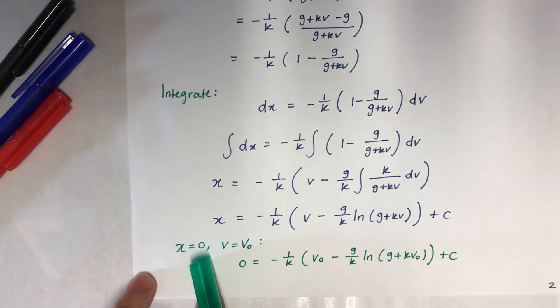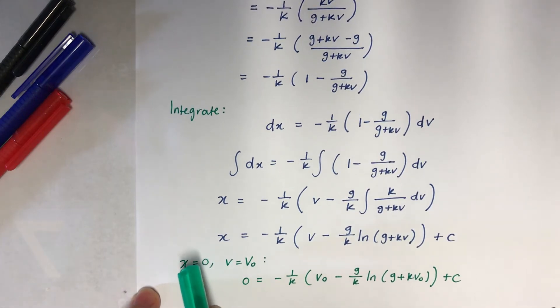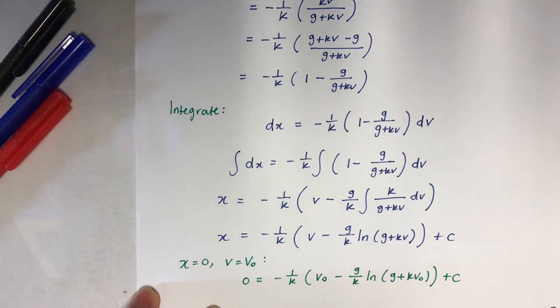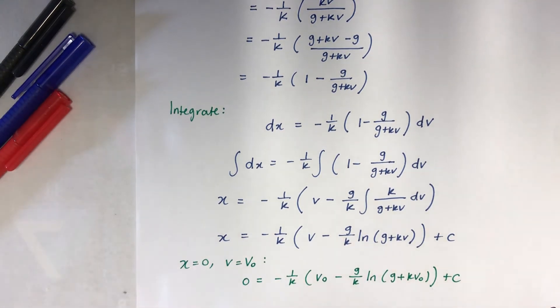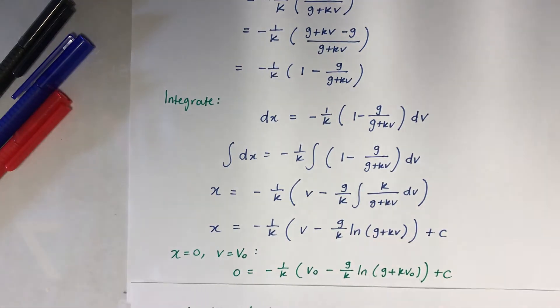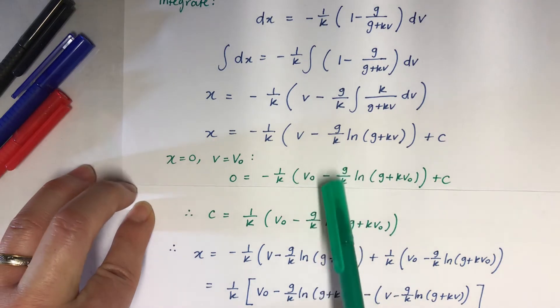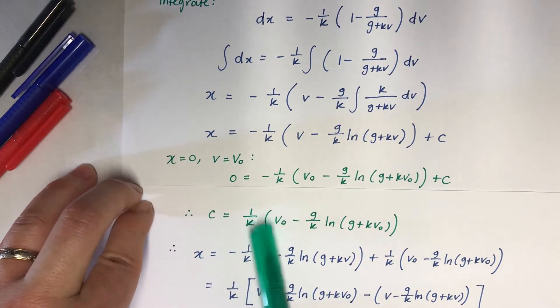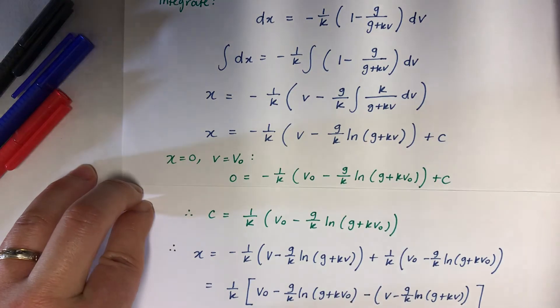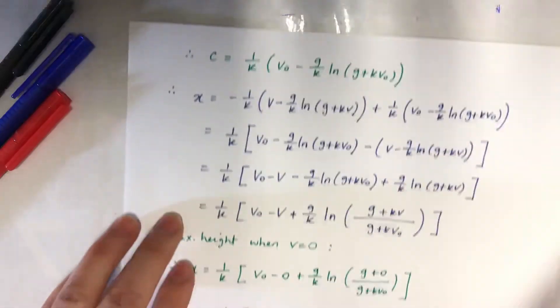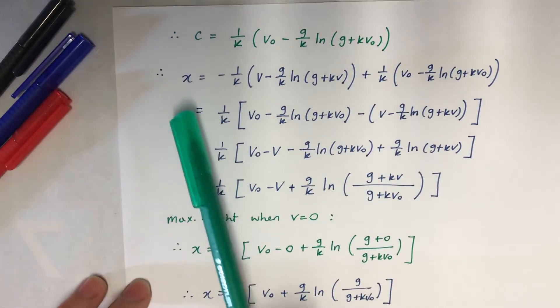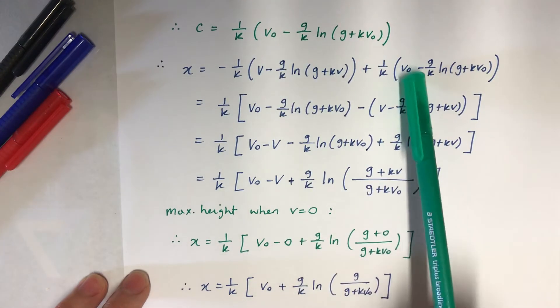Now here the initial is X equals zero, V equals V₀, because it says in the question initial velocity V₀, so it's not zero, be careful about that. So when we do that, my C equals, because C goes to the other side, C equals, so it becomes positive. And then what I'm going to do is put it into the original form that I started with, with a C in it.